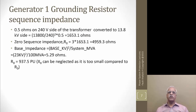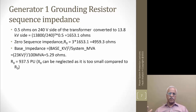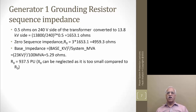We have 0.5 ohms on the 240 V side of the grounding transformer. Converting to the 13.8 kV side using the square of the voltage ratio gives 1653 ohms. The zero sequence impedance R0 is three times this value because I0 from each phase flows through the neutral, becoming 3×I0. So the impedance reflects in the zero sequence network as three times the connected value: 4959 ohms, approximately 5000 ohms. The base impedance is kV² divided by system MVA, which is 5.29 ohms on 23 kV, and R0 is 937.5 per unit — almost infinite — so X0 of 0.014 can be neglected compared to R0.